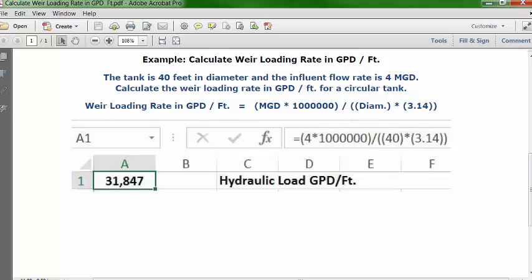And in the formula bar you can type in this formula. Equal sign, open parenthesis, 4, multiplication key, 1,000,000, close parenthesis, division key, 2, open parenthesis, 40, close parenthesis, multiplication key, open parenthesis, 3.14, 2, close parenthesis.